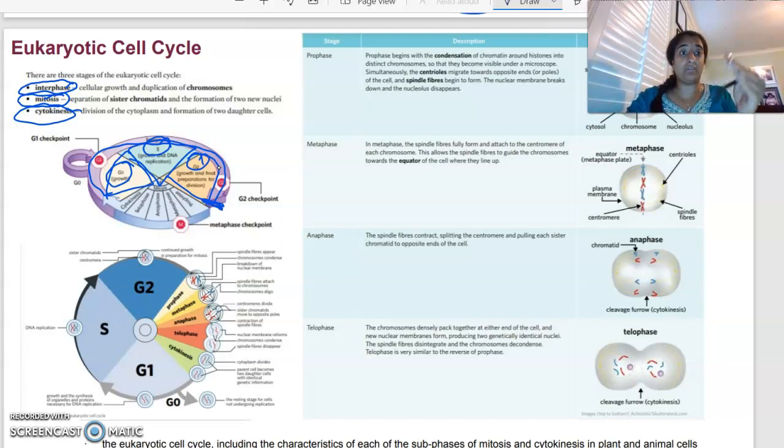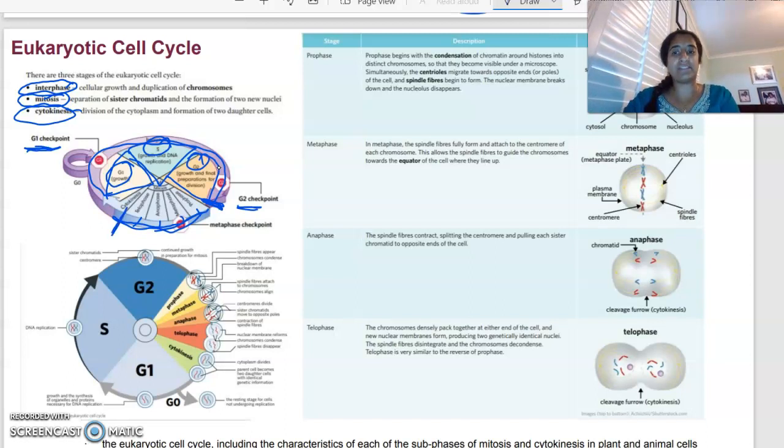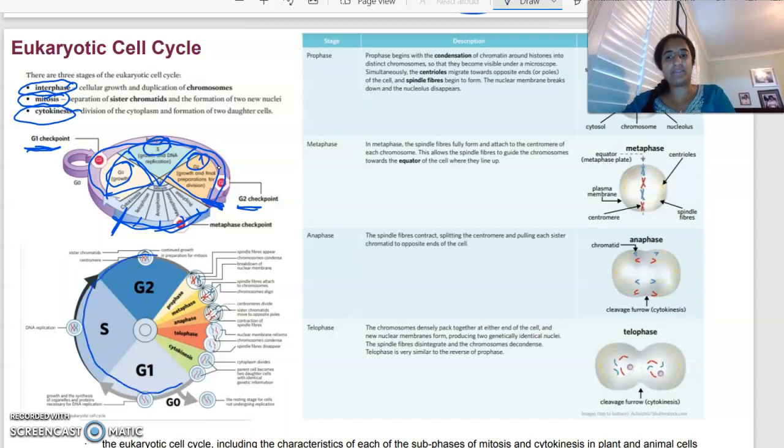And once we reach the end of G2, this is where mitosis is going to begin. The thing to note as well is we have these checkpoints. We have a G1 checkpoint and a G2 checkpoint. That's basically to see if the growth and the replication after the S phase has actually occurred properly. And if it has, then we are going to undergo mitosis. If not, the cell will undergo apoptosis, which is cell death. We have our mitosis, which we're going to go through. So you can see here, prophase, metaphase, anaphase, telophase. And then at the end, we have cytokinesis, which is that last section.